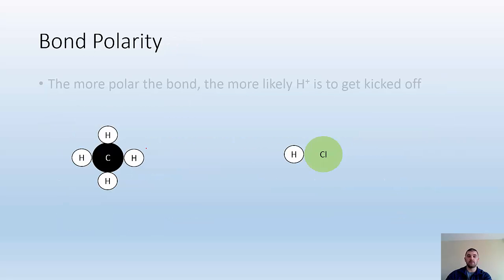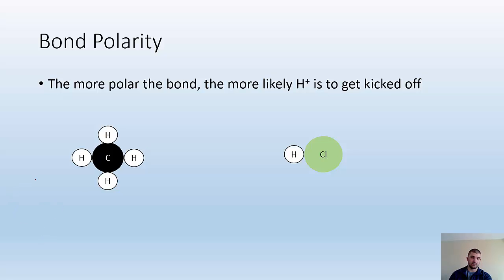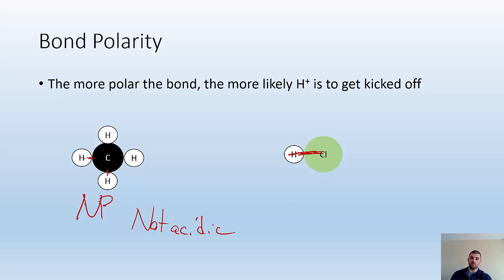Bond polarity: the more polar the bond is, the more likely H+ is to get kicked off. If we take a look at CH4, all of these bonds are nonpolar, which is why it's negligibly acidic — so it's not acidic. Whereas HCl, the bonds are very polar, which makes this — well, we know this is a strong acid. The reason is because you've got such a polar bond there that H is likely to get kicked off.